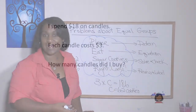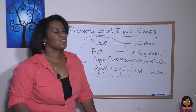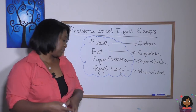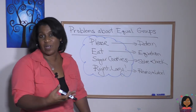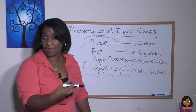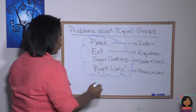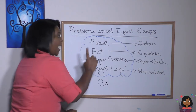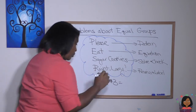Let's take a look at another example. I spent $18 on candles. Each candle costs $3. How many candles did I buy? Let's start with please — pattern. We had a certain amount spent on the candles and we know how much each candle costs. We want to know how many candles we bought. That sounds like we're missing the number of groups, but we have the number of each — each one costs $3 — and we have the total. It's a multiplication pattern. So for the equation, we're missing the group: C for candle times $3 equals $18.